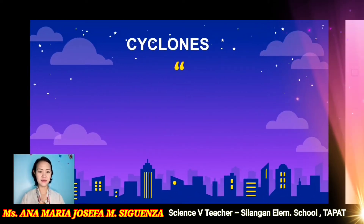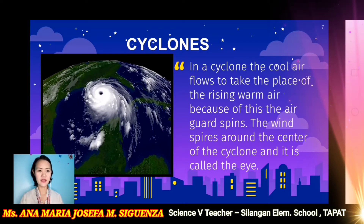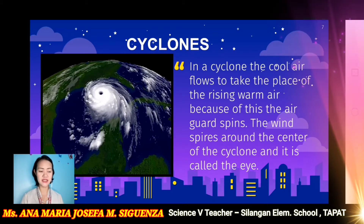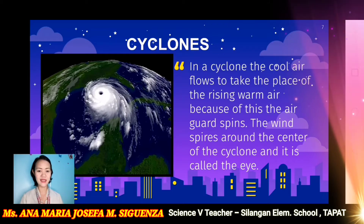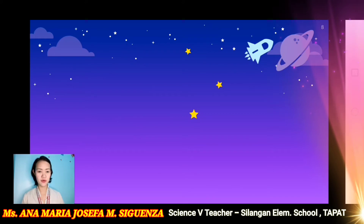What is a cyclone? In a cyclone, the cool air flows to the place of the rising warm air, and because of this, the air spins. The wind spirals around the center of the cyclone and it is called the eye. You can see a small hole in the middle of it — that is what we call the eye of the cyclone. When a cyclone is formed over the tropics, it is now called a tropical cyclone.